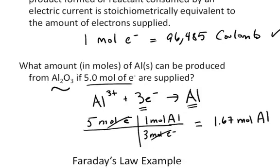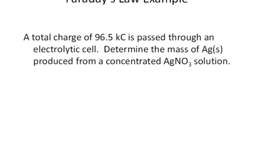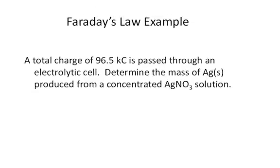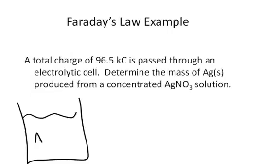Let's take a look at an example. If you supplied a total charge of 96.5 kilocoulombs in an electrolytic cell, determine the mass of silver produced from a concentrated silver nitrate solution. So what we know is going on is that we have a solution containing the silver ion, the nitrate anion, and water.